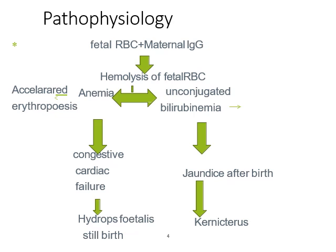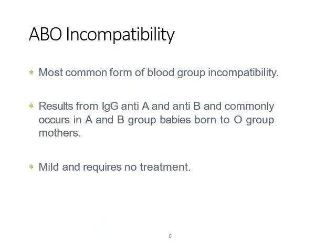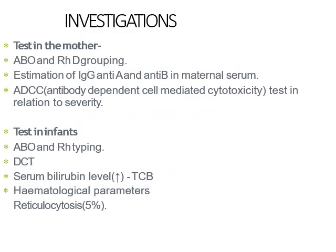ABO incompatibility is the most common form of blood group incompatibility. The mother is blood group O, producing IgG against antigen A and antigen B, which crosses the blood-placenta barrier. Usually the anemia caused by ABO incompatibility is mild and requires no treatment, because the liver and other organs also express antigen A and antigen B, so not all the antibodies bind to RBCs — some bind to other organs, making the hemolysis less severe.